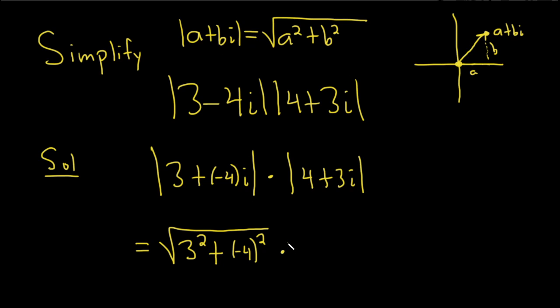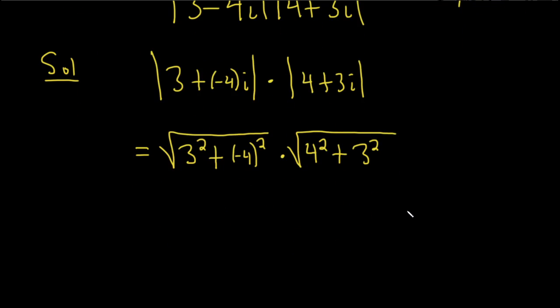So then times the square root of, same thing here, our a is 4, so this will be 4 squared, plus, and then our b is 3, so this will be 3 squared, just like that.